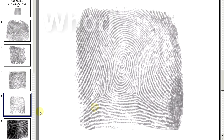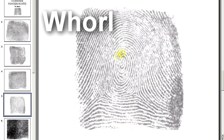The ridges in a whirl pattern form a generally round shape. There are usually two cores, one facing up and one facing down, and two deltas, one on the left and one on the right.